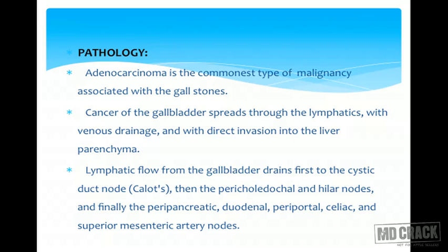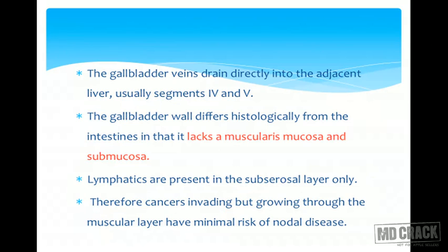Lymphatics from the gallbladder drain first to the cystic duct nodes, then to the pericholedochal and hilar nodes, and finally to the peripancreatic, duodenal, periportal, celiac, and superior mesenteric artery nodes. This sequence is important — you may be asked to identify the correct order of lymphatic spread from gallbladder to higher nodes.